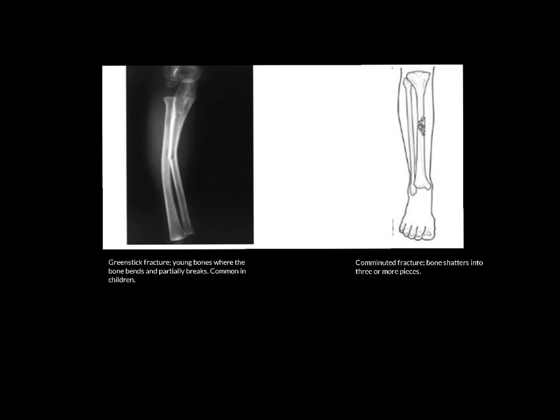Here are another couple of types of fractures. A greenstick fracture — you can see the tibia and fibula are bent, and as they've bent, one of them has broken a little bit. It's called a greenstick fracture because it's like a green stick that's just come off a tree. If you bend a fresh twig, it bends a little bit and then ultimately breaks — and that's where this fracture gets its name. The bone has bent and then broken.